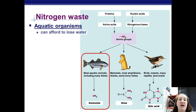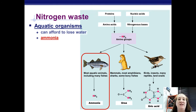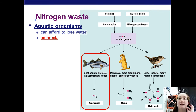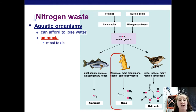Aquatic organisms, especially freshwater organisms, can afford to lose water like crazy. Remember, freshwater fish are peeing all the time, so there's no point in spending energy to convert ammonia to a less toxic substance, because they have tons of water to dilute it. They don't waste energy on it.